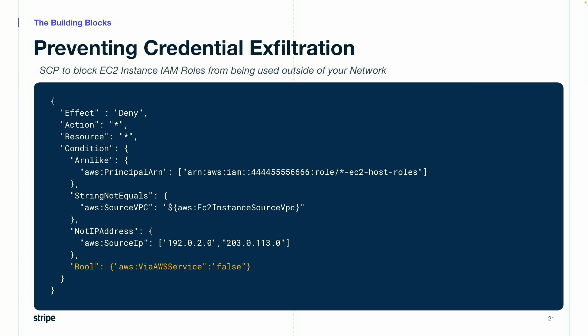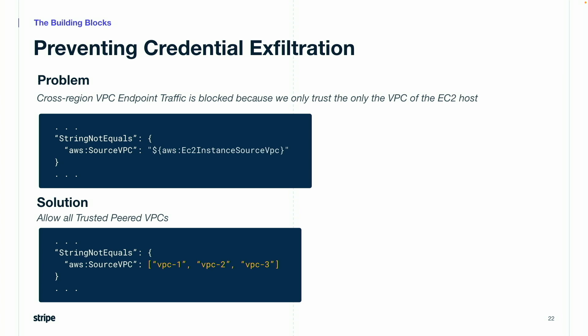The fourth condition returns true if the action is not made by an AWS service. Adding this condition allows AWS services to still use the targeted roles. Now that we have seen the base version of the SCP, let's look at some of the problems we're going to run into and their solutions.